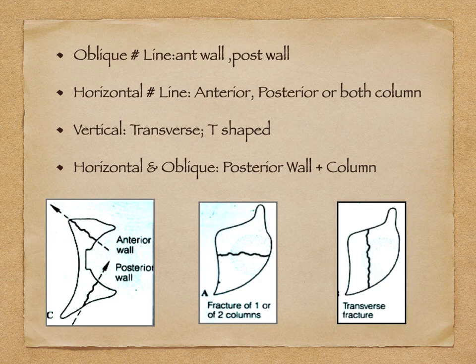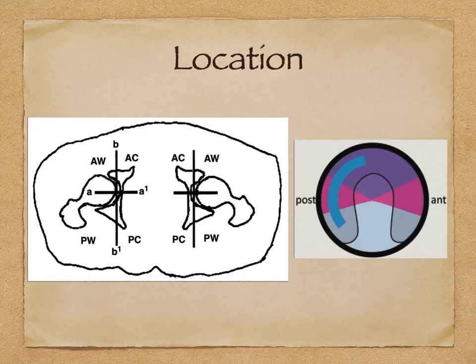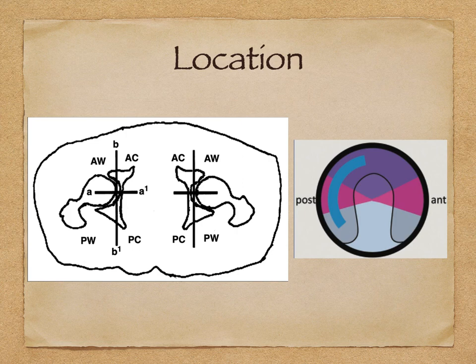If you have an oblique fracture line, or horizontal and oblique together, that means there is a combination of two types of fracture. Once you have identified the fracture line type, you go on to the quadrant - identify whether it is anterior or posterior, and whether it is towards the wall or the column. Anything anterior to line A is anterior, anything posterior to A is posterior. Anything lateral to line B is wall, whereas anything medial to B is column.